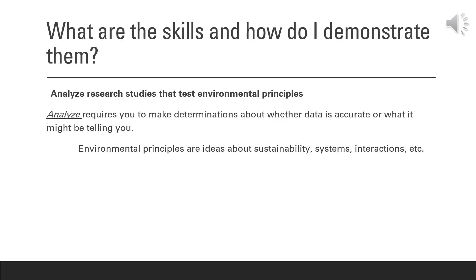The third skill is to analyze research studies that test environmental principles. Again, we're looking at analyzing — making determinations about whether something is accurate or what it might be telling you. Environmental principles can include ideas about sustainability, overall systems, interactions, and specific concepts that are the basis of environmental practices.